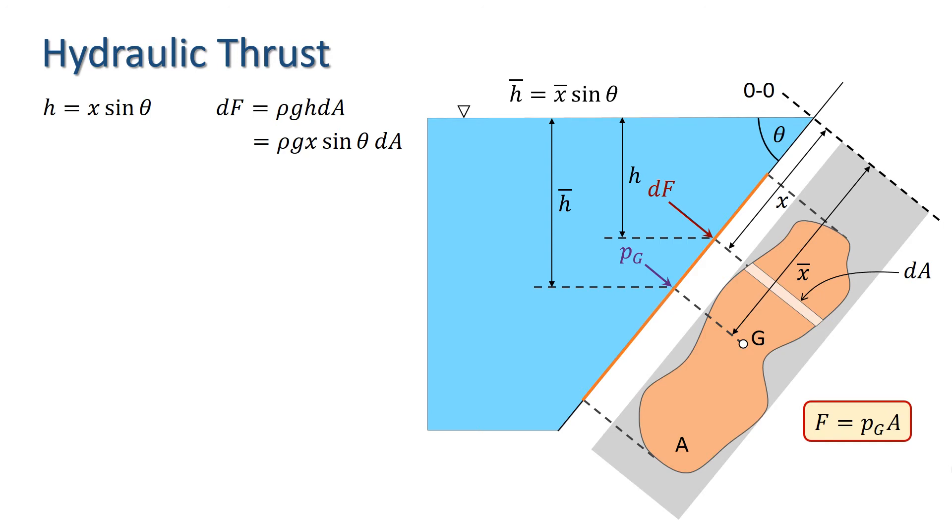Okay, so we have the magnitude of the hydraulic thrust, but we don't know where its line of action is. It won't act through the centre of gravity, since the pressures below G are greater than those above G.